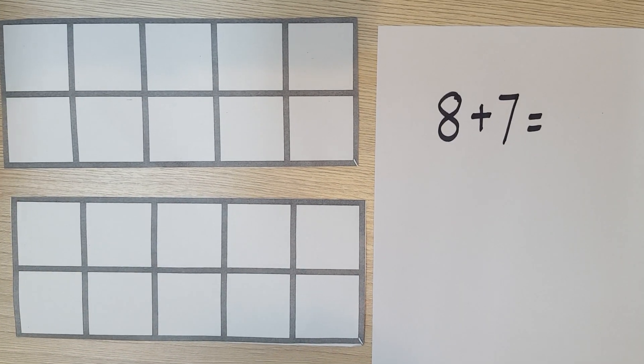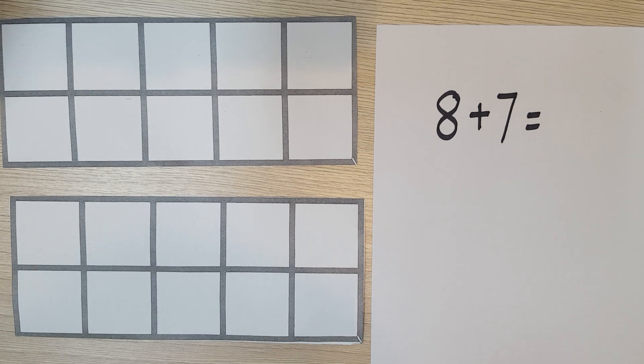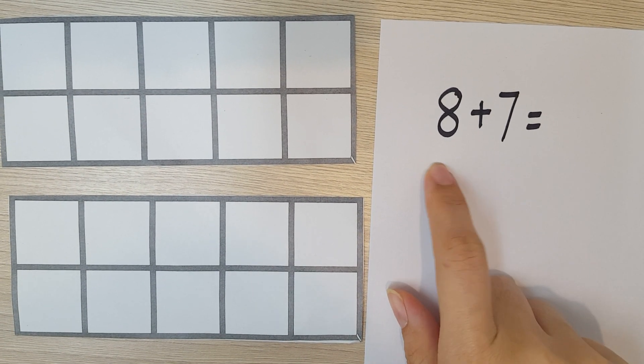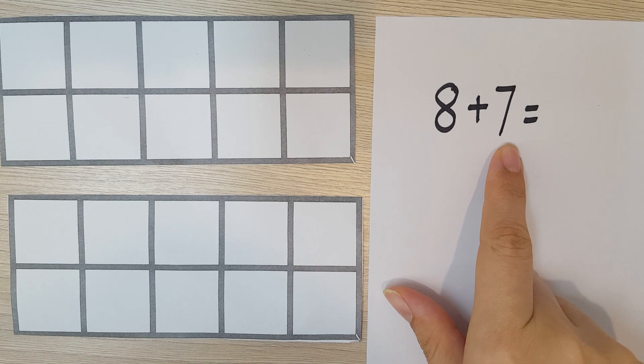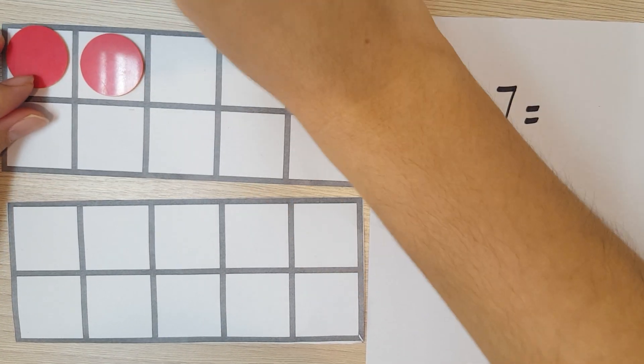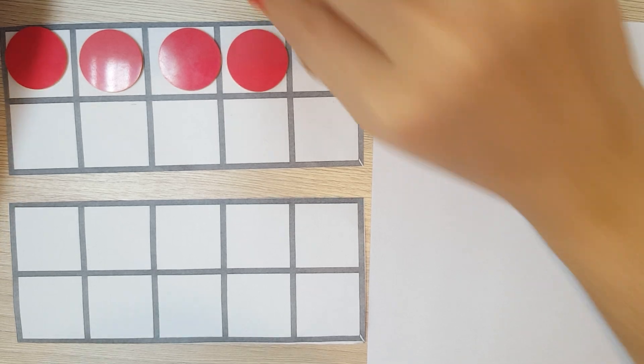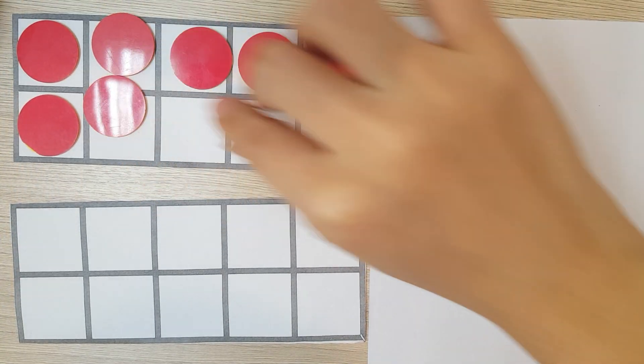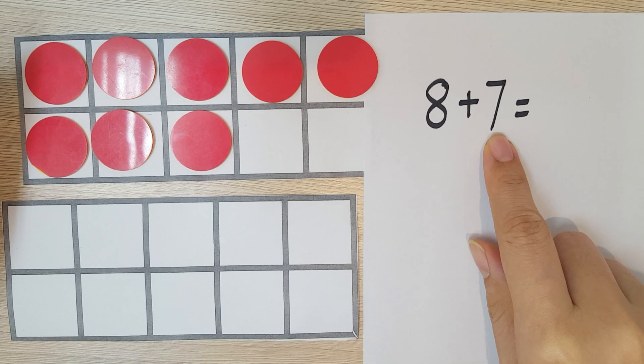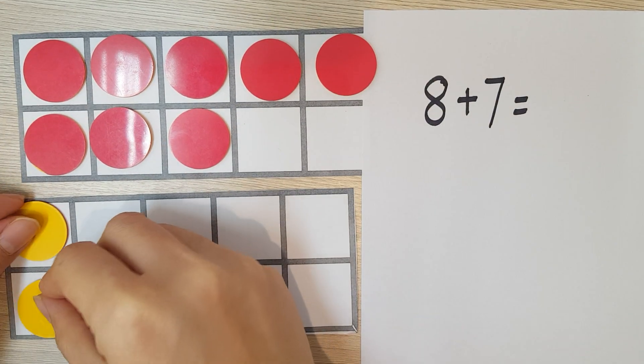Hi, so today we're going to learn how to add by making 10. Okay, so the question we're going to tackle today is 8 plus 7. Okay, so let's look at some counters here. First, I'm going to put 8, and it's going to be red. So I have 8 red counters, and plus 7. So I'm going to take another 7.